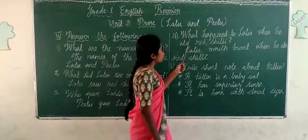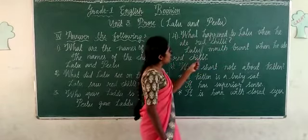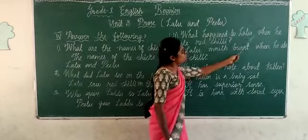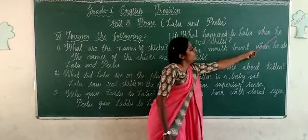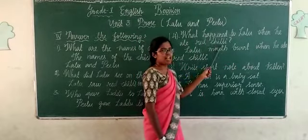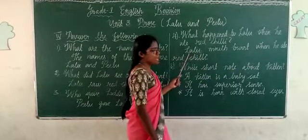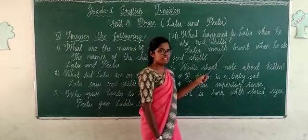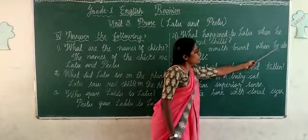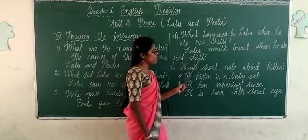Fourth question: What happened to Lalu when he ate the red chilli? W-H-A-T happened. H-A-P-P-E-N-E-D. Happened to Lalu. L-A-L-U. When he ate red chilli. R-E-D. C-H-I-L-L-I. Lalu's mouth burned when he ate the red chilli. Mouth. M-O-U-T-H. Burn. B-U-R-N. When he ate red chilli.